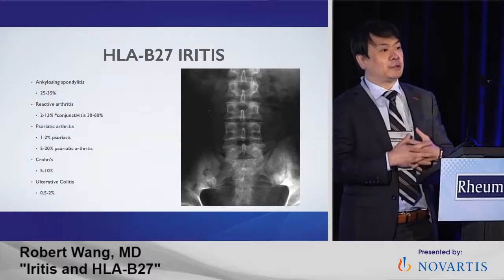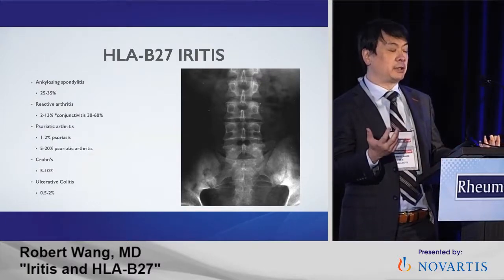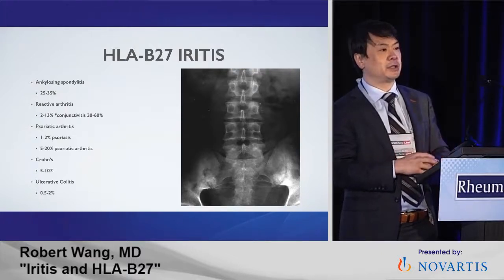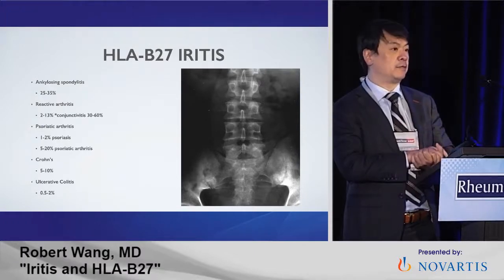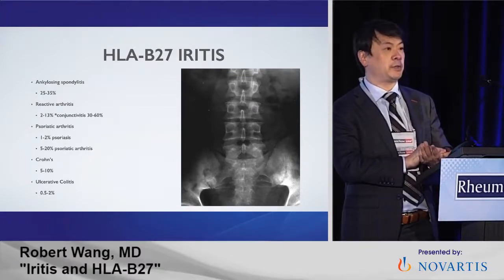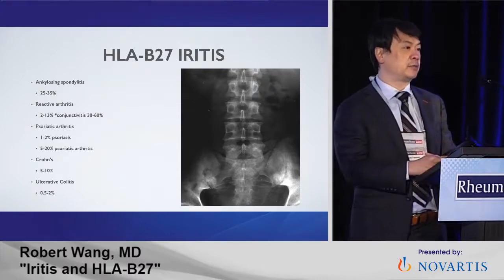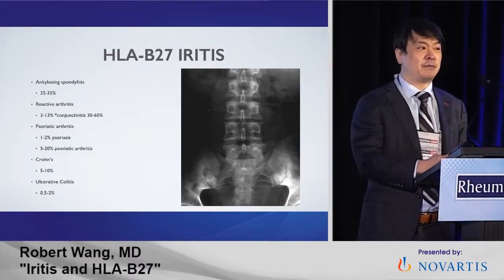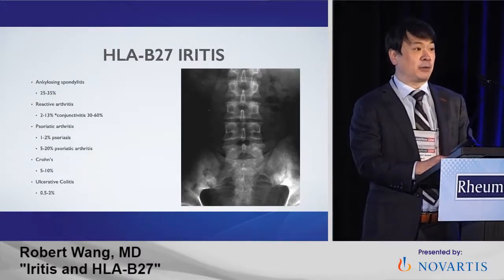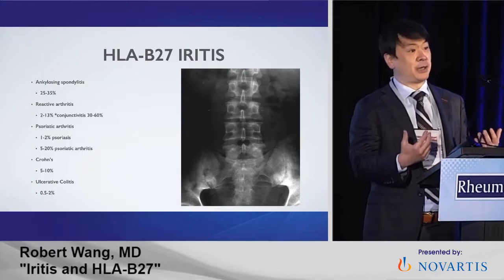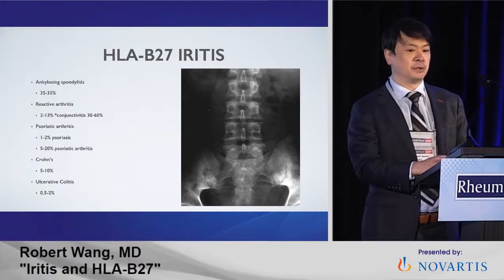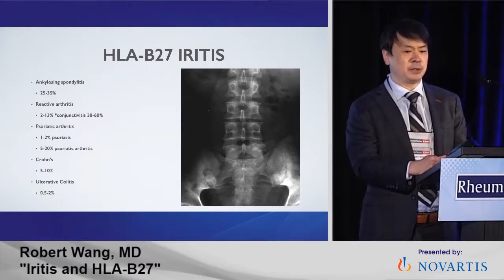I already know it's HLA-B27 without getting a blood test. What I'm more curious about is if they have an associated systemic disease. When you look at all spondyloarthropathies associated with HLA-B27, the majority are associated with ankylosing spondylitis — seen in about 25 to 35% of cases in case series. Reactive arthritis is second most common at 2 to 13%. The common triad includes conjunctivitis, but those tend to be self-limiting. Inside the eye, the iritis may be 2 to 13%.